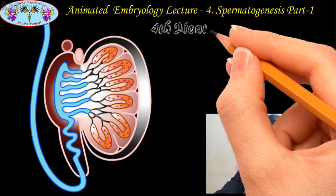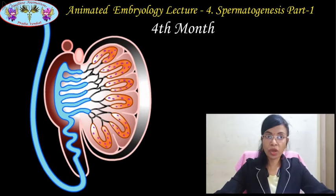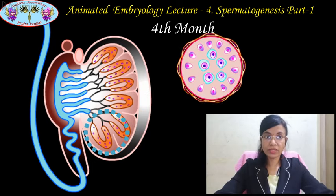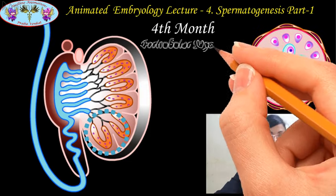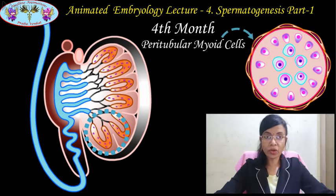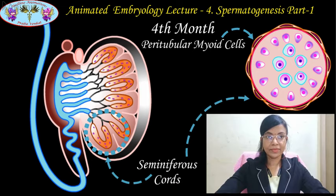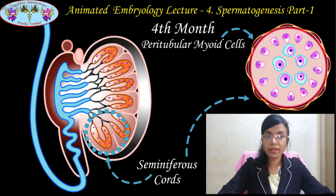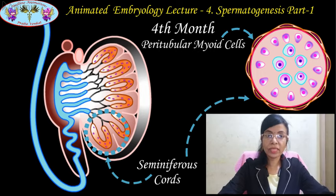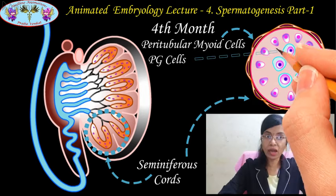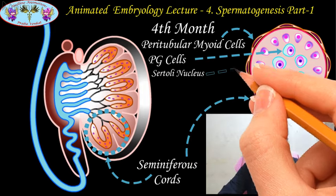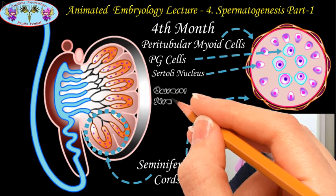Around the fourth month, the medullary cords arrange themselves into horseshoe-shaped structures. The mesenchymal cells present around this region get converted into peritubular myoid cells, forming a few layers around the horseshoe-shaped medullary cords. This structure is now called the seminiferous cords. On screen you can see a section of the developing testis showing the seminiferous cords with the primordial germ cells in the center surrounded by large Sertoli cells resting on the basement membrane covered by peritubular myoid cells.